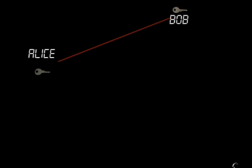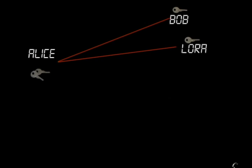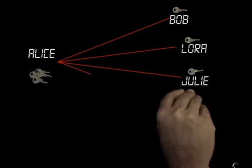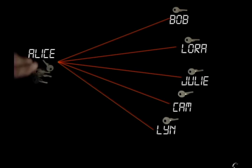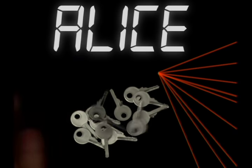Plus, if Alice needs to communicate with multiple people, perhaps she's a bank, then she's going to have to exchange distinct keys with each person. Now she'll have to manage all of these keys and send thousands of messages just to establish them.